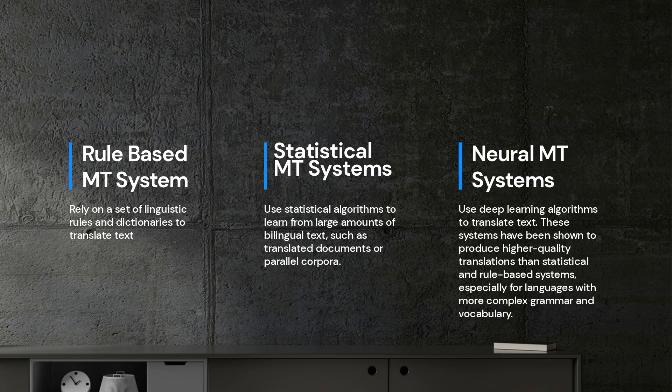Statistical MT systems use statistical algorithms to learn from large amounts of bilingual text, such as translated documents or parallel corpora. These systems are more effective than rule-based systems for languages with more complex grammar and vocabulary, but the quality of the translation can still be hit or miss.